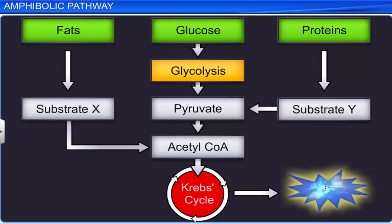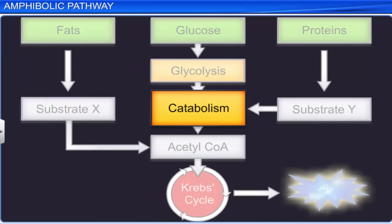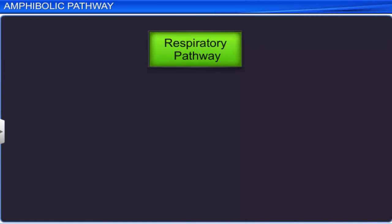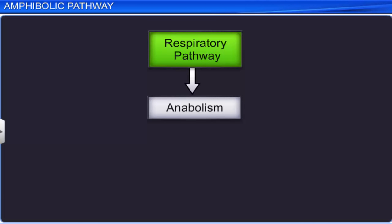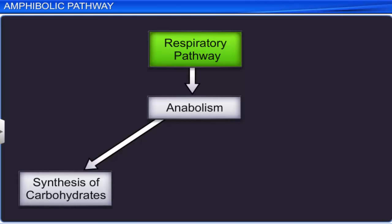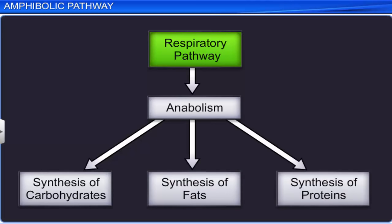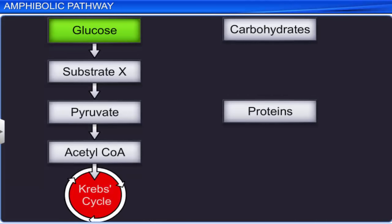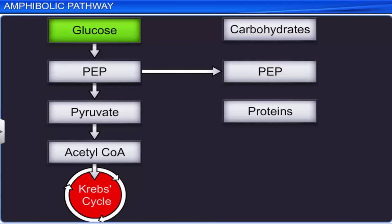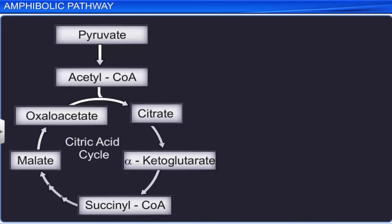These processes describe the role of the respiratory pathway in catabolism. The respiratory pathway also plays a role in anabolism — the synthesis of complex substances like carbohydrates, fats, and proteins. When the plant requires proteins or carbohydrates, it can synthesize them by withdrawing some of the substrates in the respiratory pathway. For example, the PEP formed during glycolysis is withdrawn and used for the synthesis of proteins or carbohydrates. Likewise, if the plant requires fats, it withdraws acetyl coenzyme A and citrate from the Krebs cycle to synthesize them.